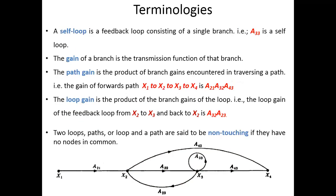A self-loop is a feedback loop that starts and ends at the same node — for example, a33 represents a self-loop. The gain of a branch is the transmission function of that branch. The path gain is the product of branch gains along a path, for example x1→x2→x3→x4.